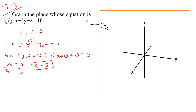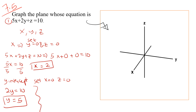Now finding the y-intercept: we set x equals to 0 and z equals to 0. Setting x and z to zero in the equation gives us 2y equals to 10, so y equals to 5 for the y-intercept.